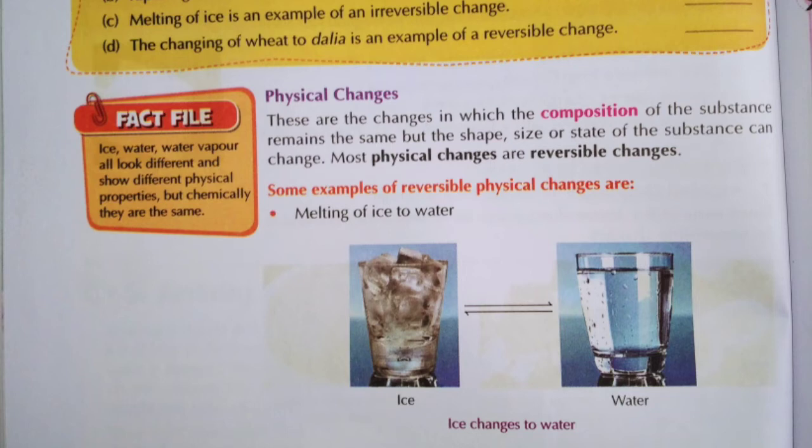Let us take an example: melting of ice. When ice melts it becomes water, and when cooled again it becomes ice. In this process, only the size, shape, and state are changed — the inner composition is not changed. So this is a physical change, specifically a reversible physical change.